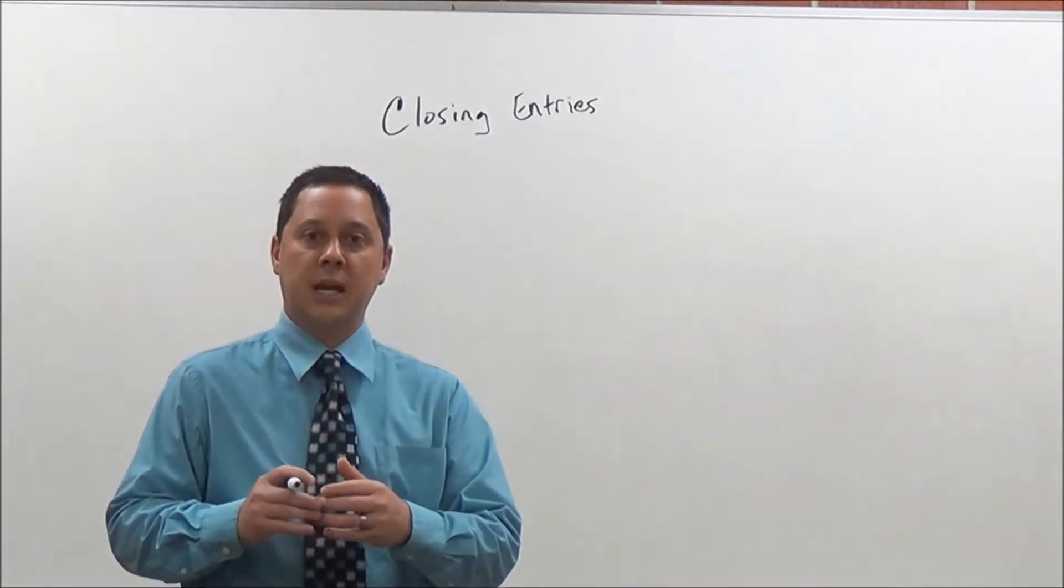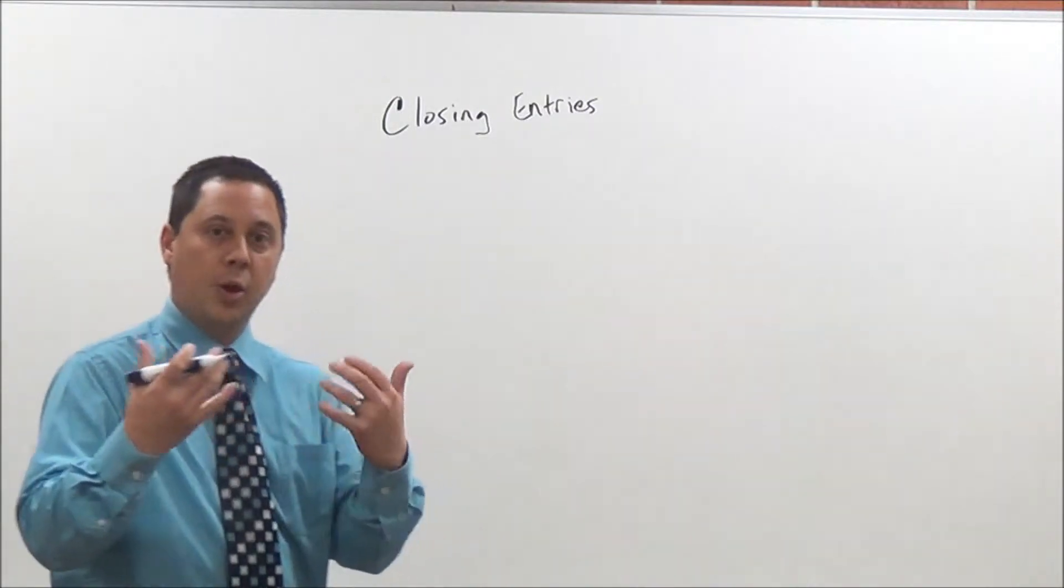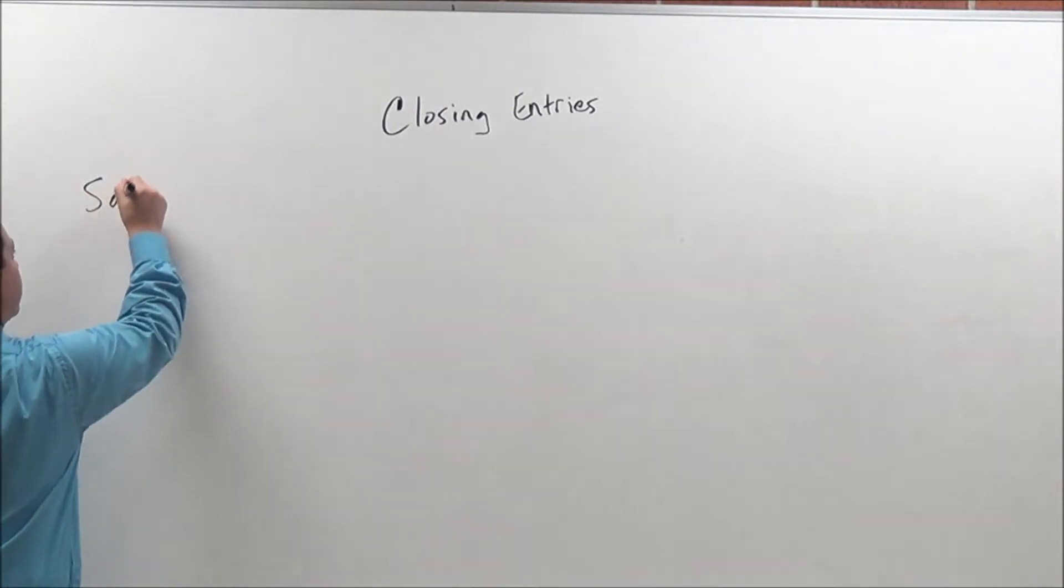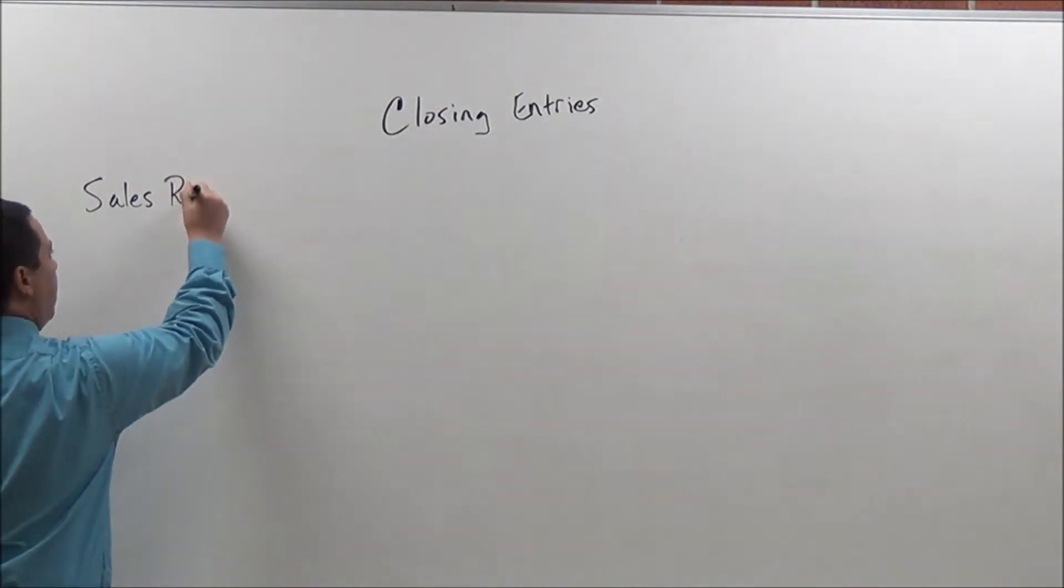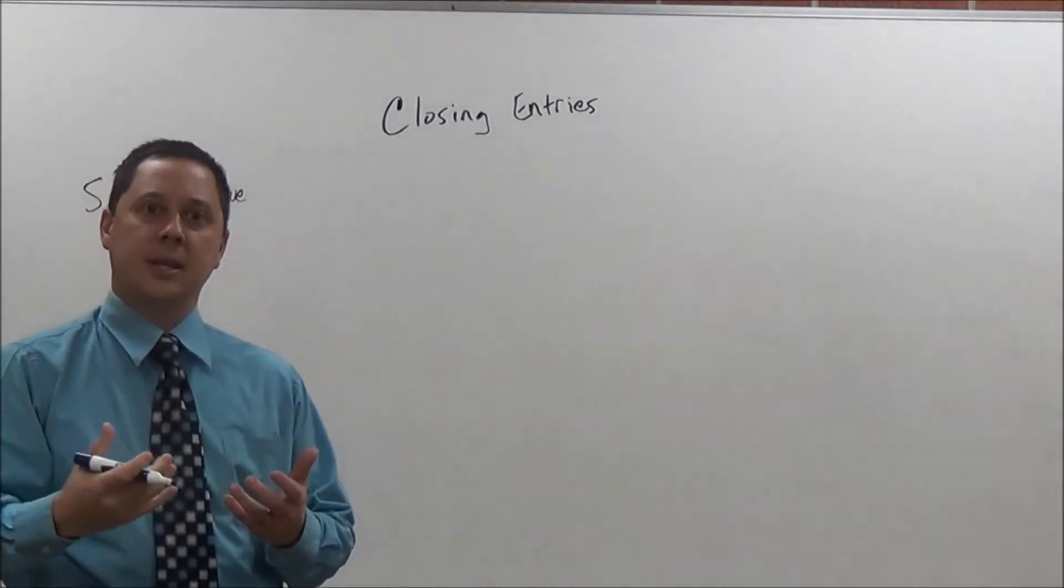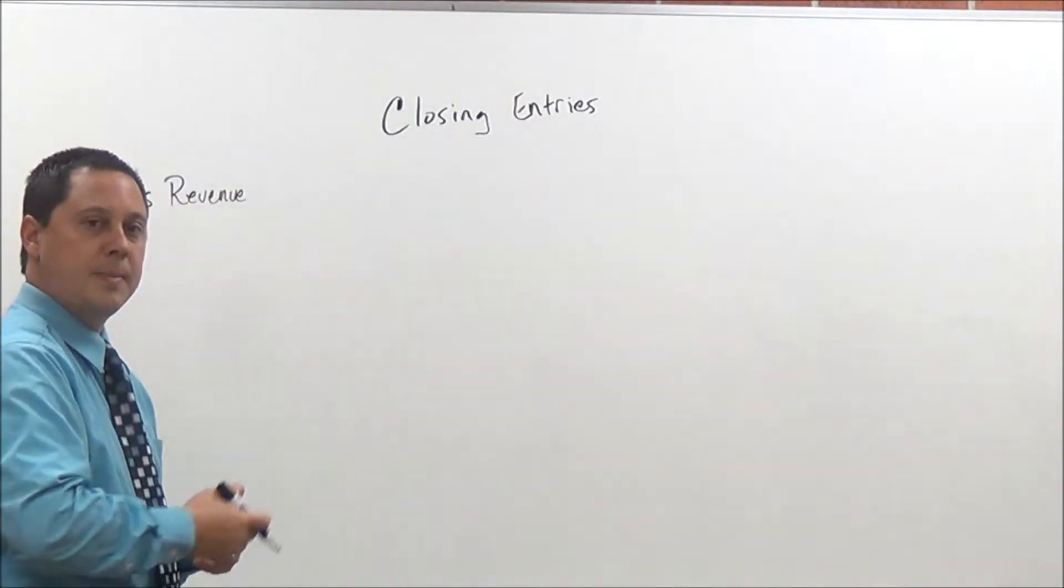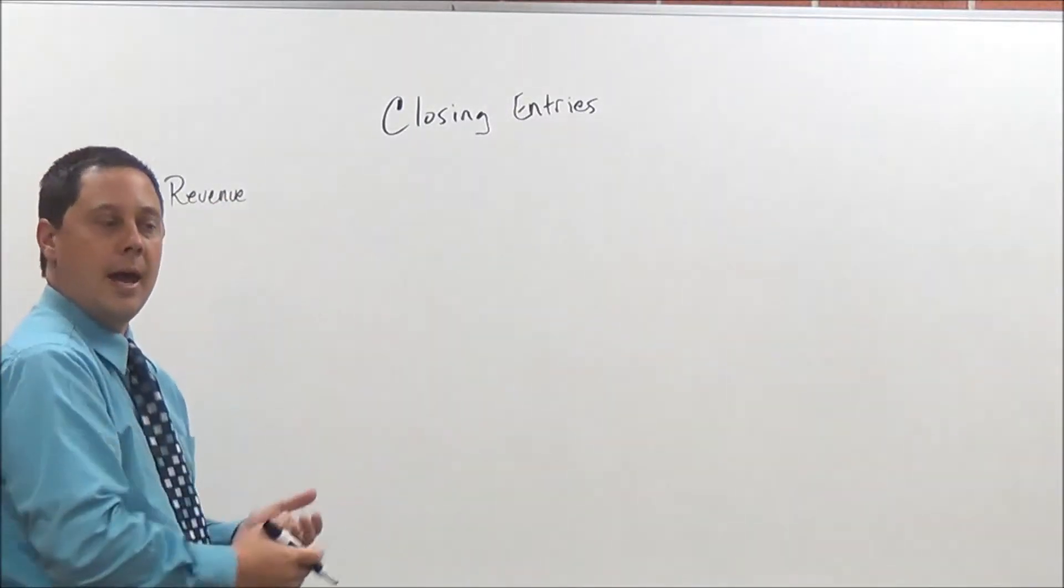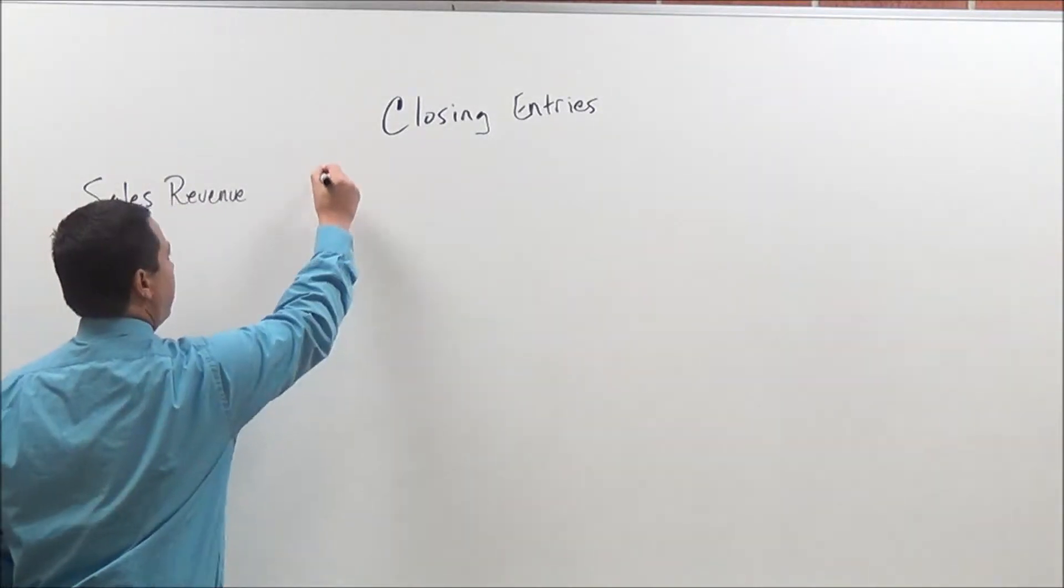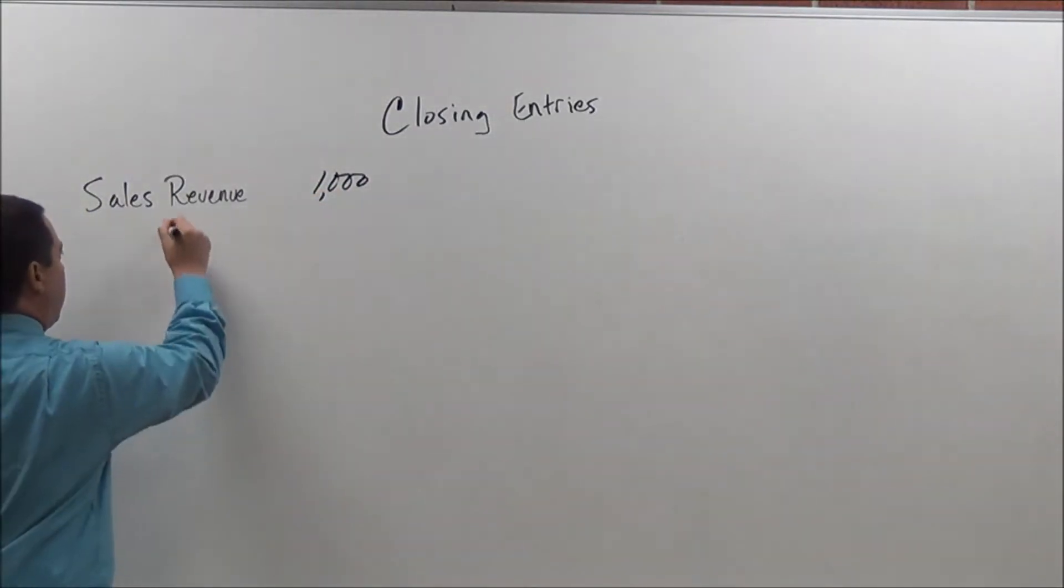So the first thing we're going to do is really take a look at our revenues and we're going to close those out. So typically what happens is here is, and I'll just start with our sales revenue, we will have a credit balance. If you remember from the video from the income statements, you will have a credit balance and then your expenses will have debits. And so what we're going to do here, let's say we have sales revenue of $1,000. I'm going to debit that and then I will credit income summary.